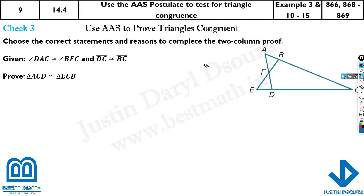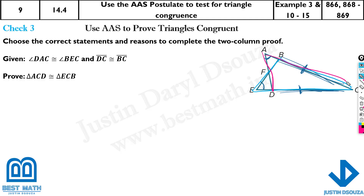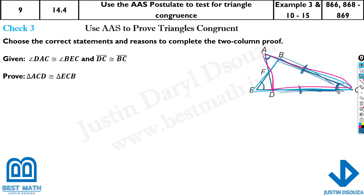How about this problem? It's the same approach. Let's see what is given first. Angle DAC is congruent to angle BEC — those two angles are done. And line DC is congruent to BC. There are two triangles — triangle ACD and triangle EBC. We can see this is the reflexive property — it's the same angle C for both.